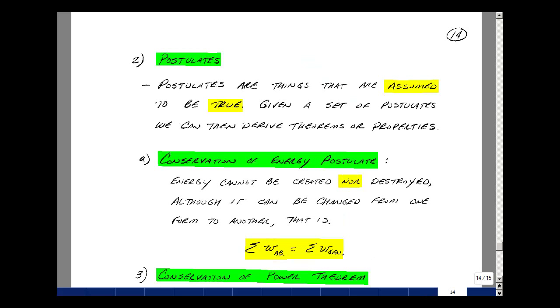You may recall in geometry that you started the course with a series of postulates and you use that to figure out a variety of results. The same is true in circuit theory. There are two postulates. These are things that we assume to be true, and if they are true, then a series of theorems and properties result.